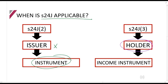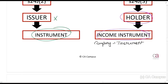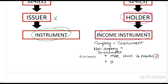If you are the holder, Section 24J only applies to income instruments. For a company, an income instrument equals any instrument — meaning anything involving interest. But for a non-company, it must be an instrument plus a more-than-12-month period, plus there is a discount or a premium that applies.